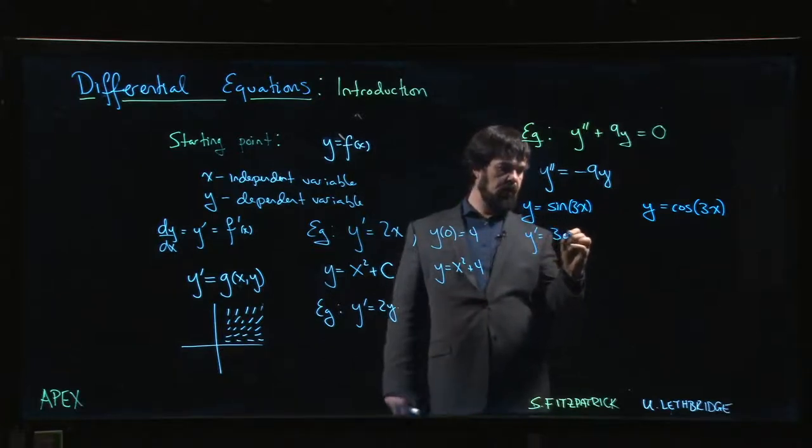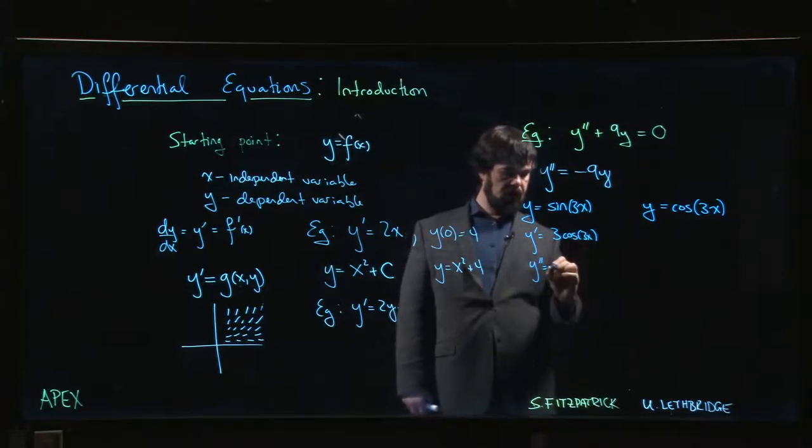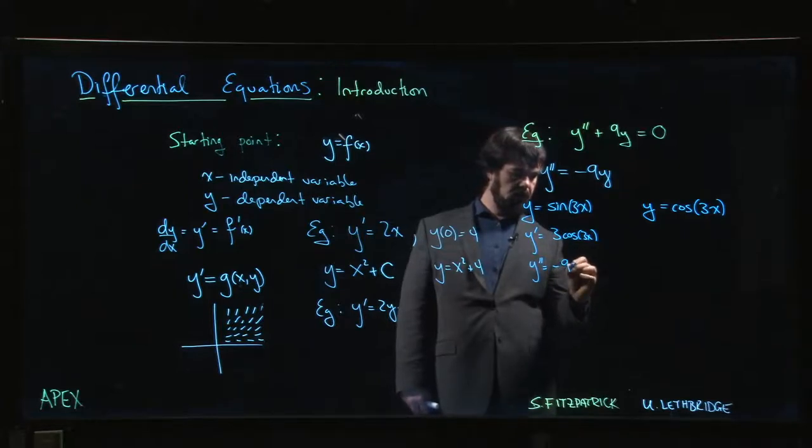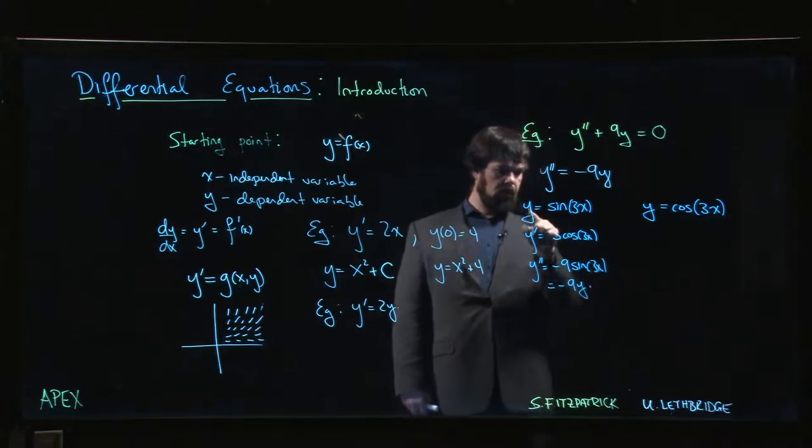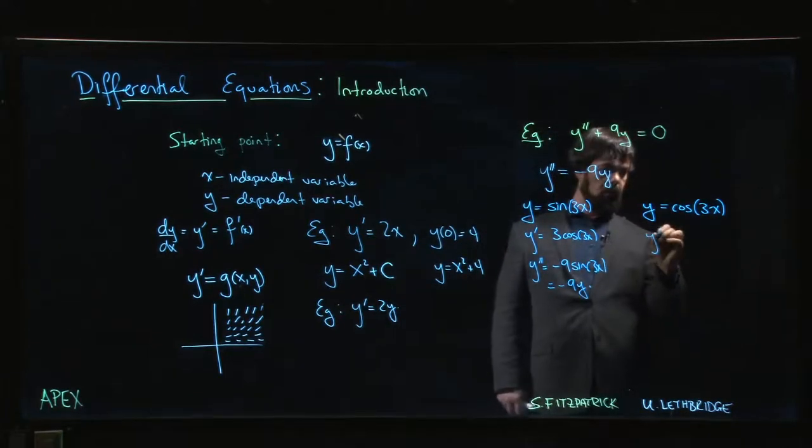If I do this, then y prime is three cos three x. Y double prime, I get minus three times three, I get minus nine sine three x, which is minus nine times y.